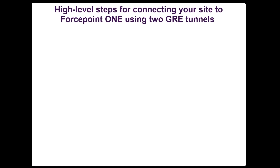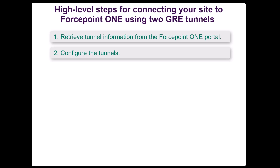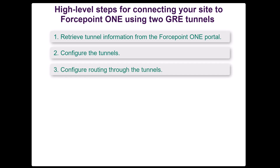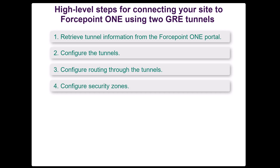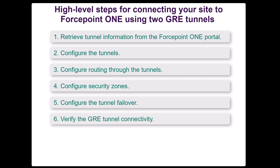To connect your site to Forcepoint 1 using GRE, you will follow six high-level steps. First, retrieve the information you will be using during the tunnel configuration from the Forcepoint 1 portal. Next, configure the tunnels to the primary and secondary data centers. Then, configure a routing instance and routing options. Next, configure security zones to include the tunnel interfaces. You will also configure a monitoring probe sent through the primary GRE tunnel to enable tunnel failover. Finally, verify the GRE tunnel connectivity.